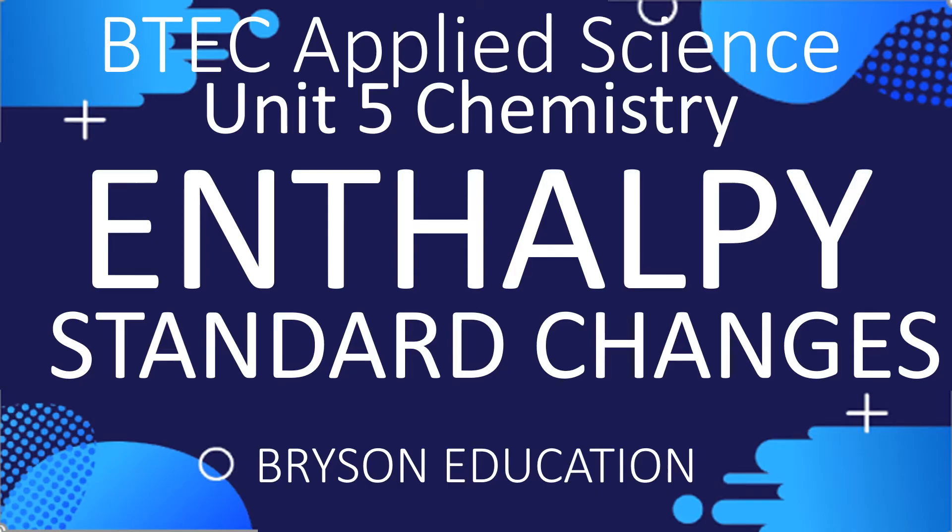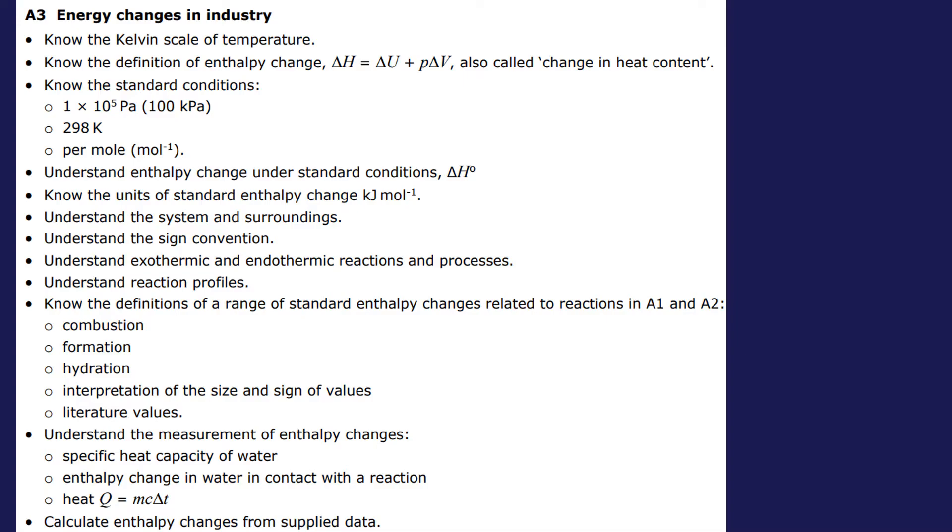Welcome to my channel on chemistry lessons. This is a BTEC Applied Science Unit 5 Chemistry, and we're going to be looking at some standard enthalpy changes. In terms of where this sits on the specification, it's learning aim A3, and we're looking at definitions of a range of standard enthalpy changes related to the reactions in A1 and A2.